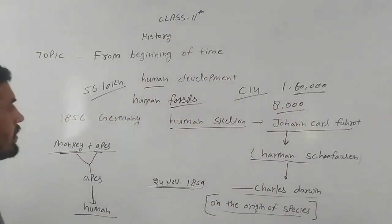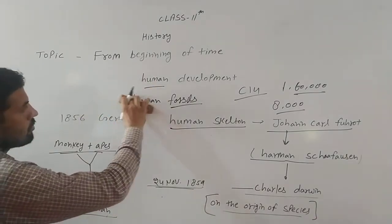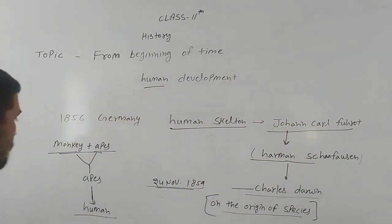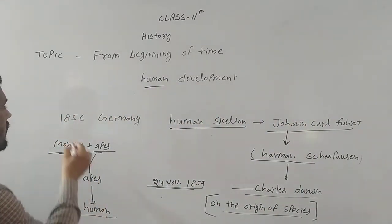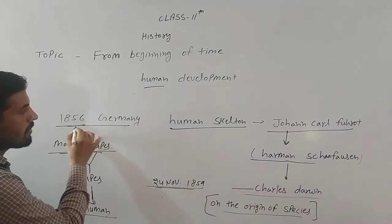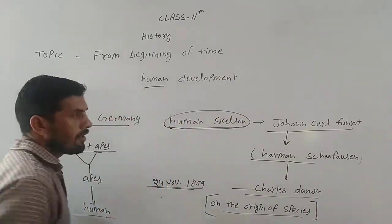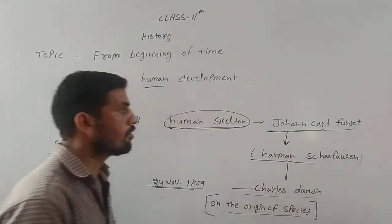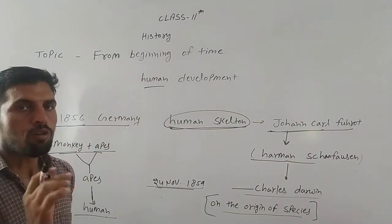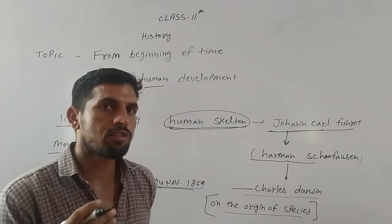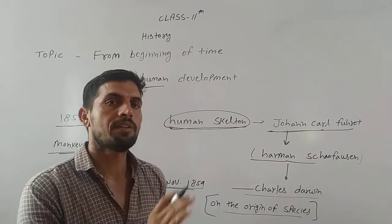Let's talk about how human development started. First of all, in 1856 in Germany, a human skeleton was discovered. This skeleton was given to Dr. John Card, who examined it and concluded that this was a human being, though it had distinct features.